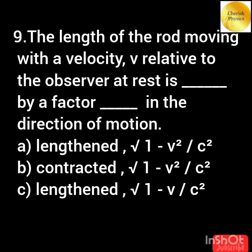The length of the rod moving with a velocity v relative to the observer at rest is dash by a factor dash in the direction of motion.